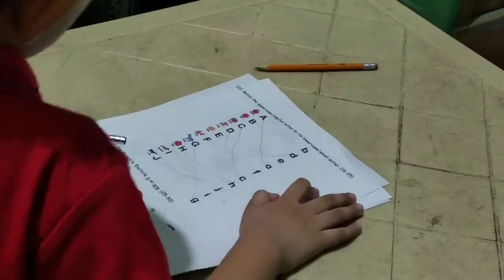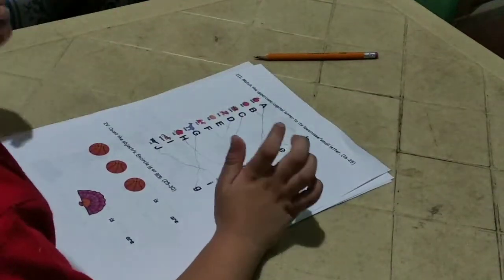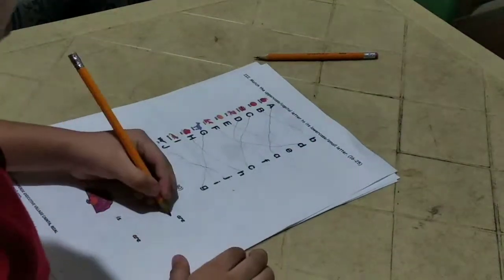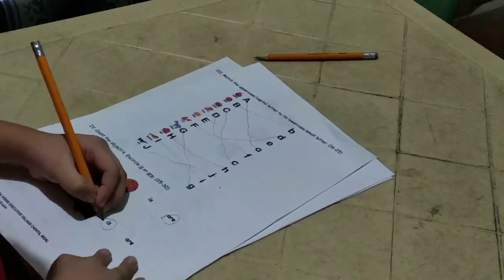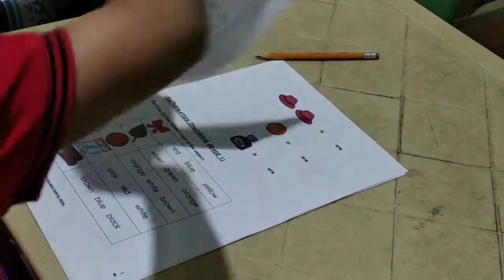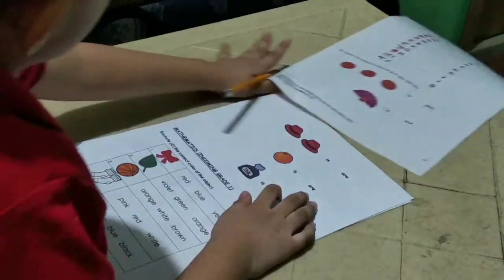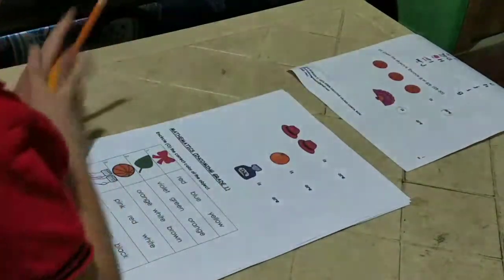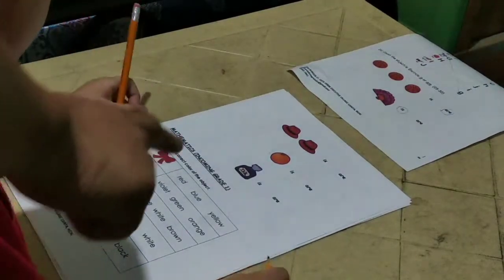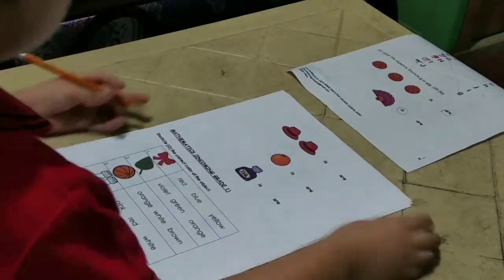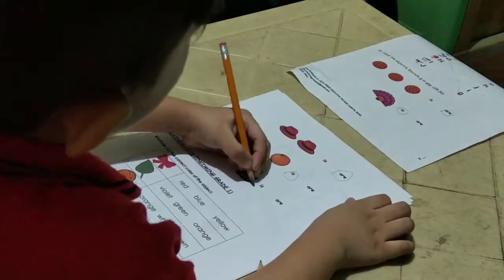Count the objects, encircle is or are. Are. Are. Is. Is. Is. Is.